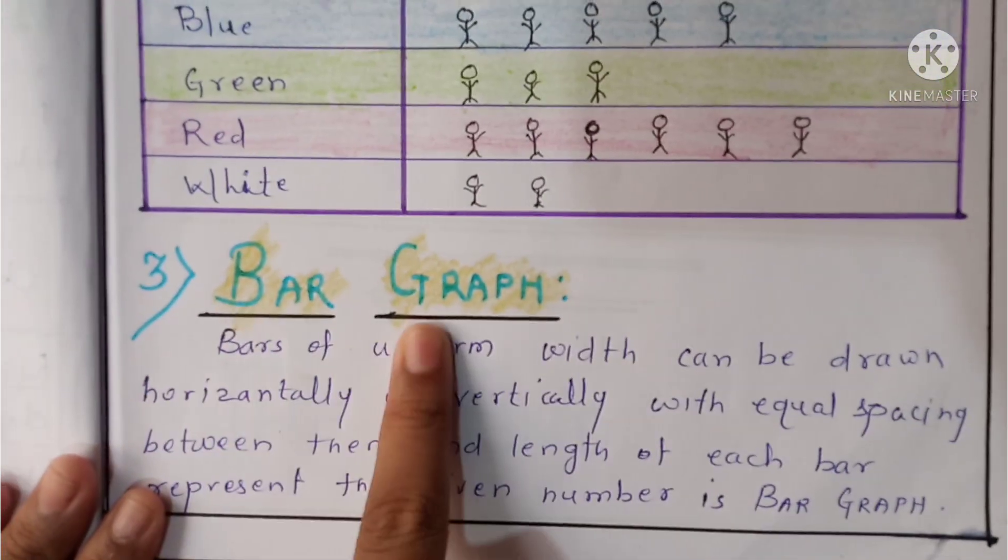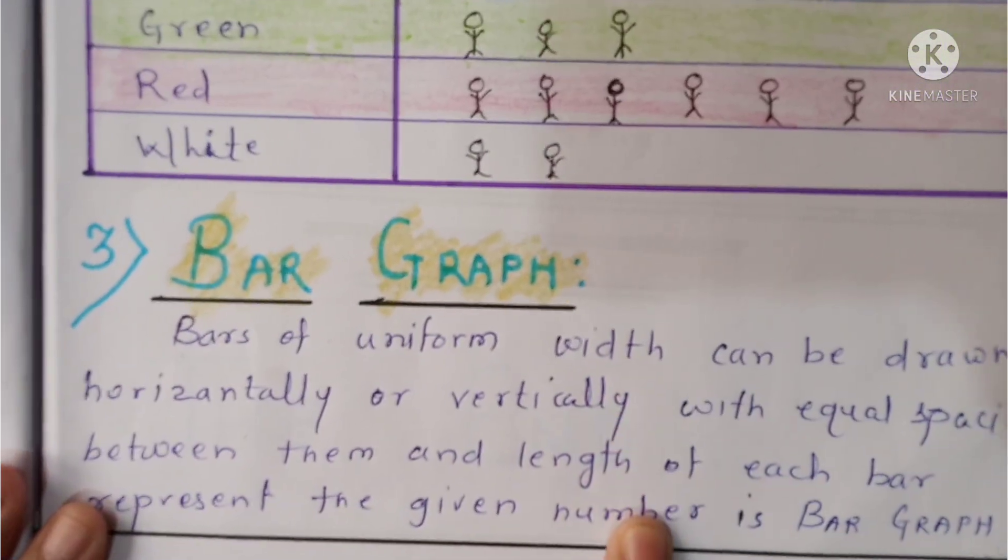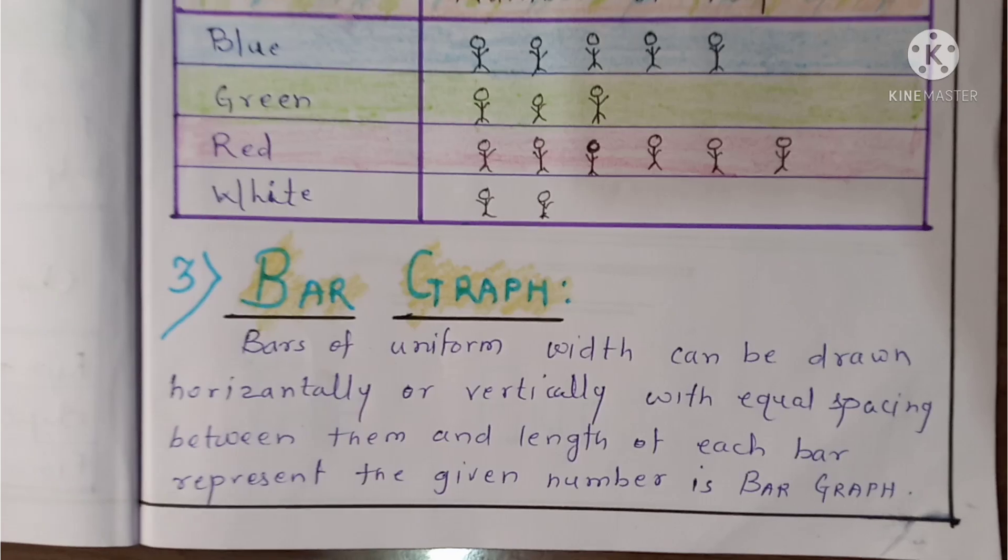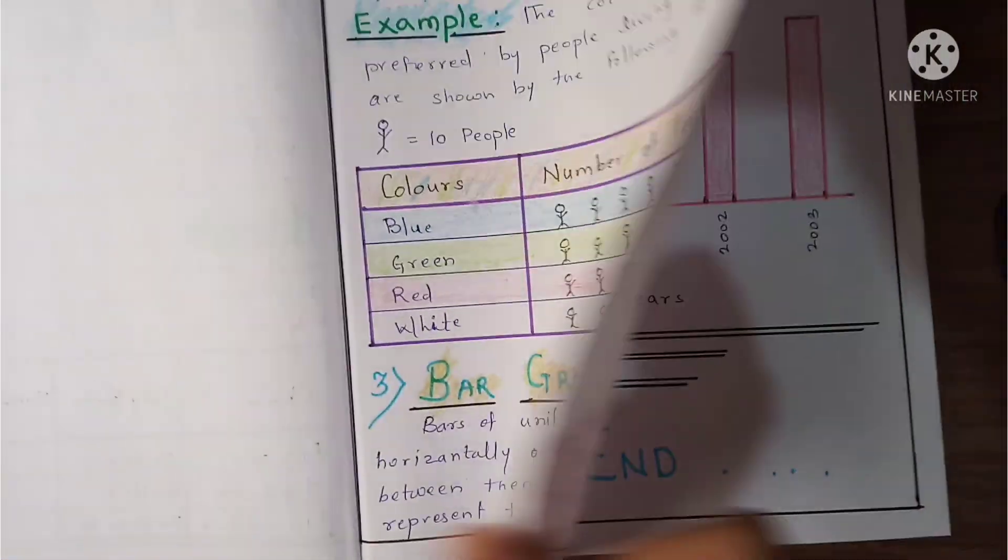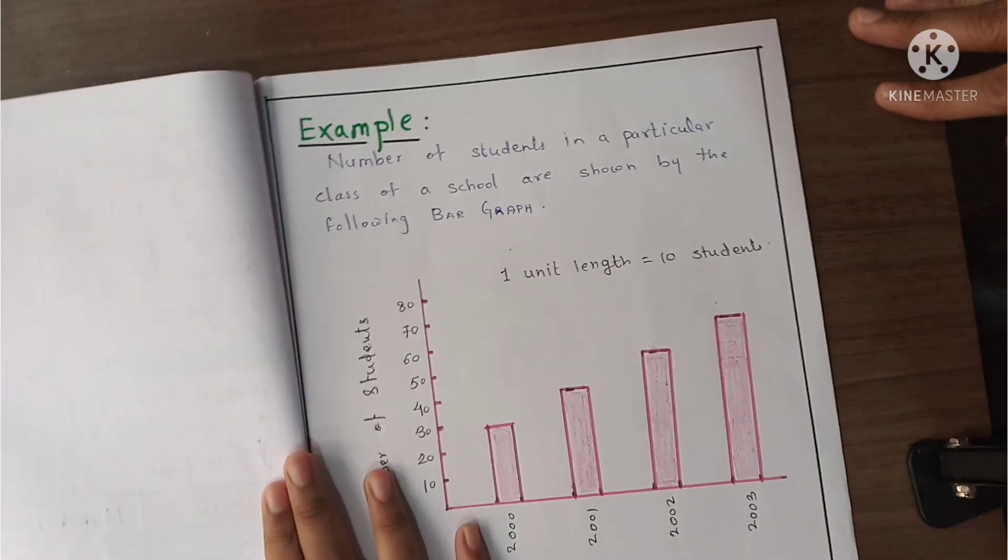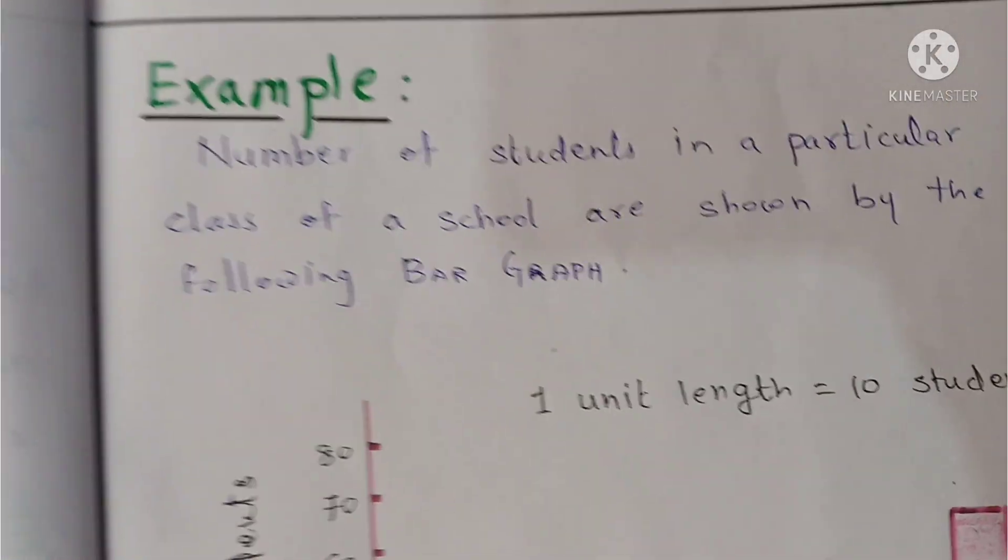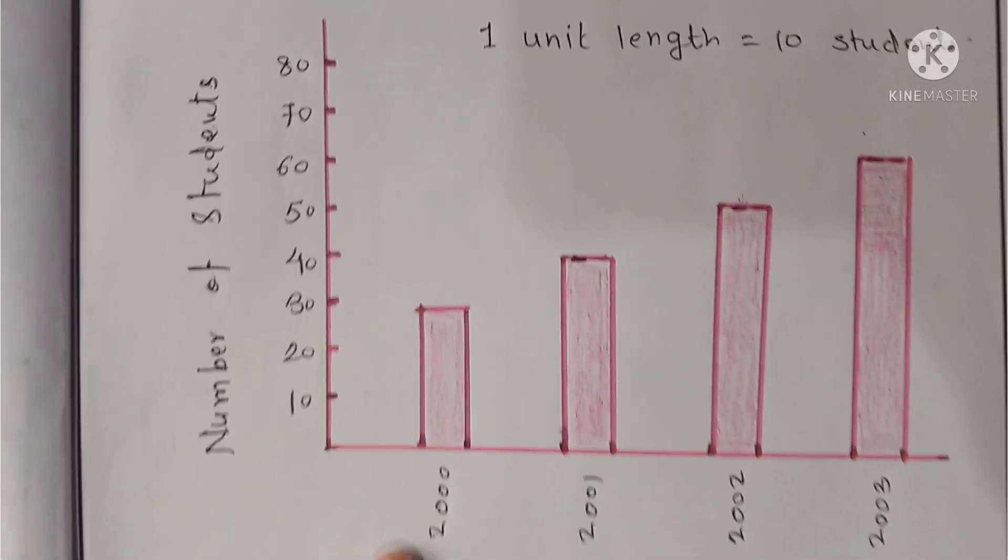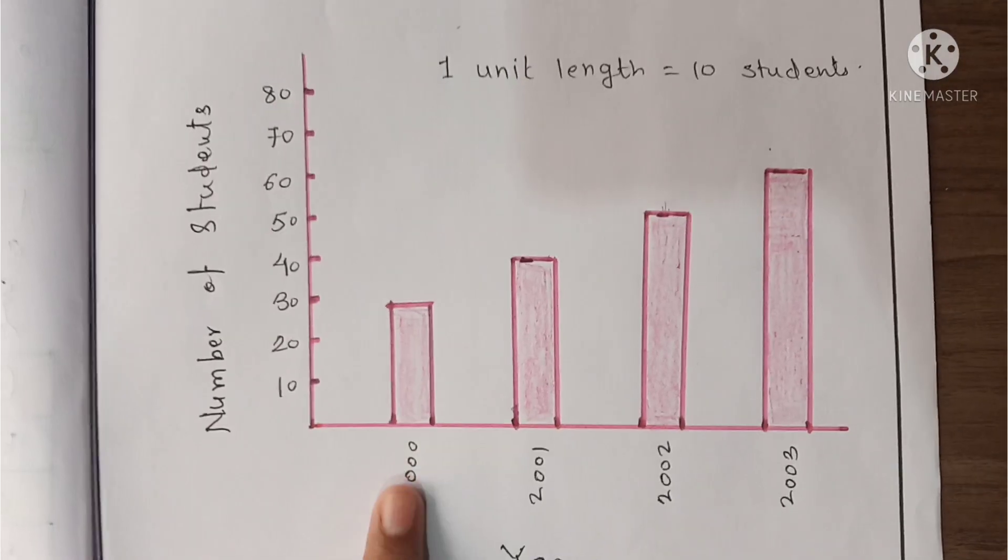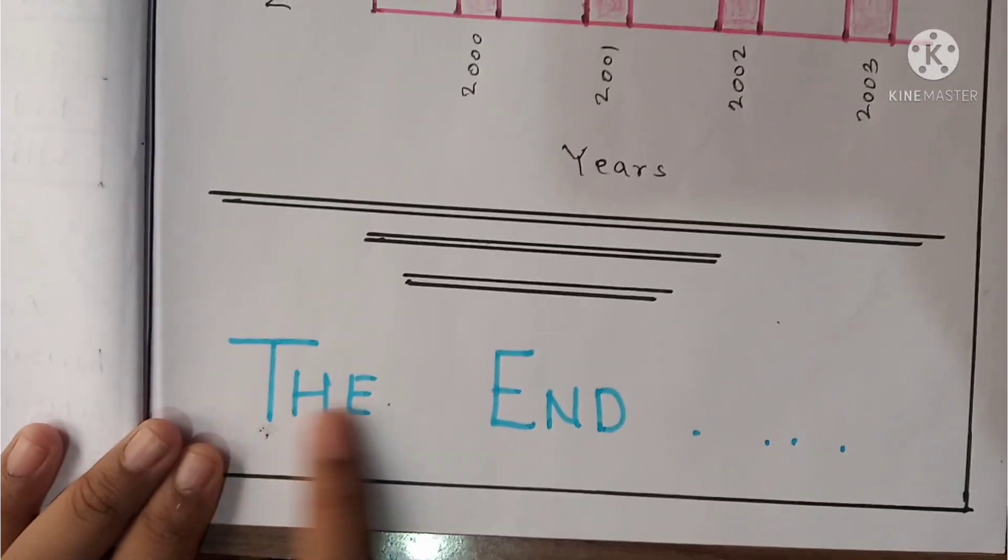And the third is bar graph. Here is the information about bar graph. Here is the example. And here is the diagram of bar graph. And here is the end.